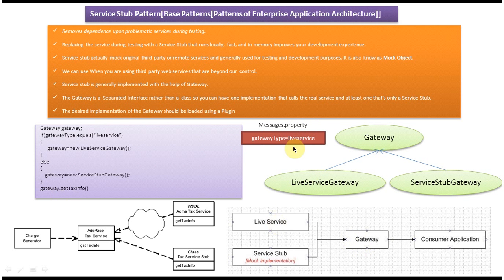If the property file defines 'service stub', the Gateway will call the Service Stub's getTaxInfo and proceed. The desired implementation of the Gateway should be loaded using a Plugin — I have created a separate video for the Plugin design pattern on my channel. To summarize: the Service Stub removes dependence upon problematic services during testing, and this is the Service Stub design pattern. Thanks for watching, bye.